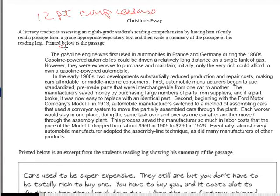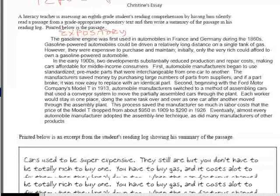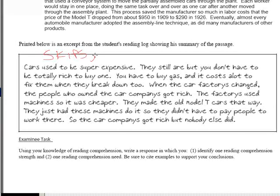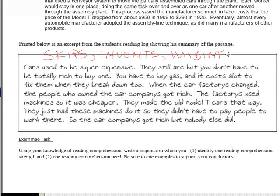When you read this over, you're going to see that this is expository text. You'll look at the child's written response to that question, and you'll see clearly that the child is having problems with the following: the child skips details, the child invents details, and finally the child simply misinterprets. And that's what these children do in all of these comprehension questions.